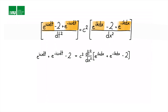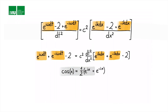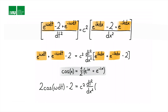To eliminate the imaginary units, we use the cosine definition: cosine x equals one-half (e to the ix plus e to the minus ix). Injecting this, the left-hand side becomes 2 cosine(omega·dt) minus 2, and the right-hand side becomes c squared times dt squared over dx squared, times (2 cosine(k·dx) minus 2). Dividing the whole equation by 2 simplifies it further.